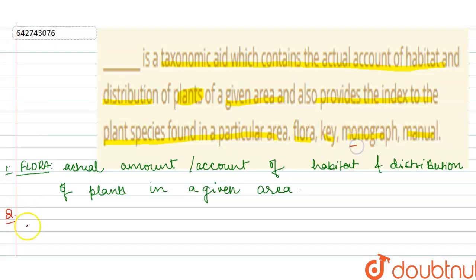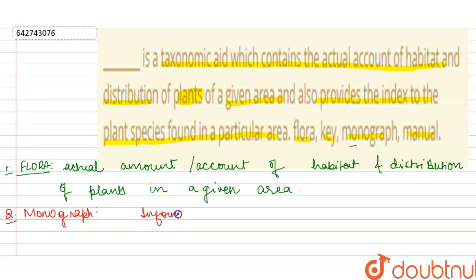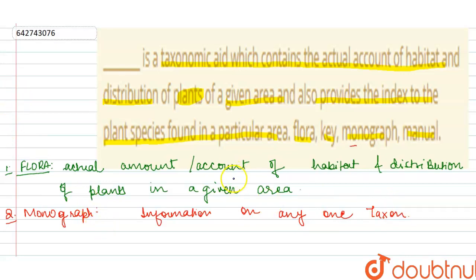The second option is monograph. Monograph contains information on any one taxa or taxon. So monograph contains information regarding any one of the taxa.